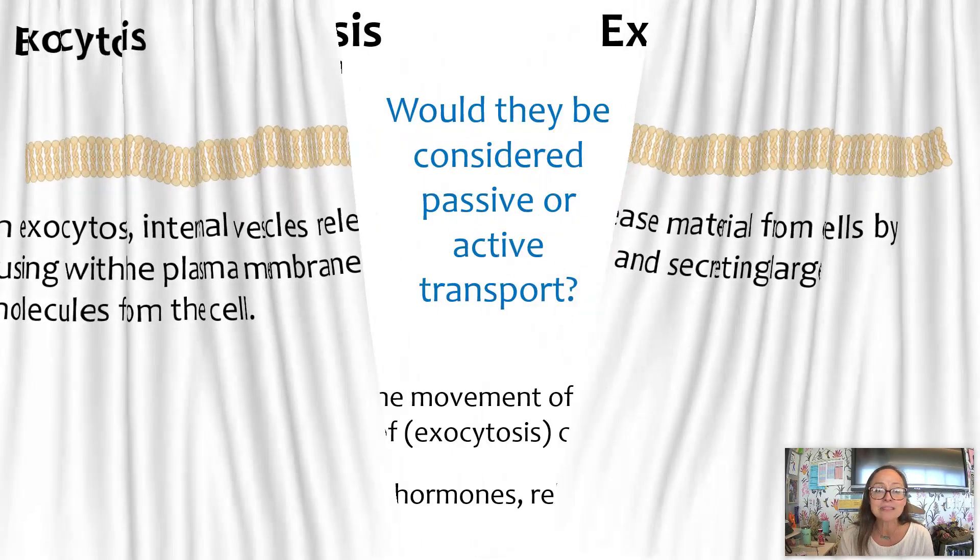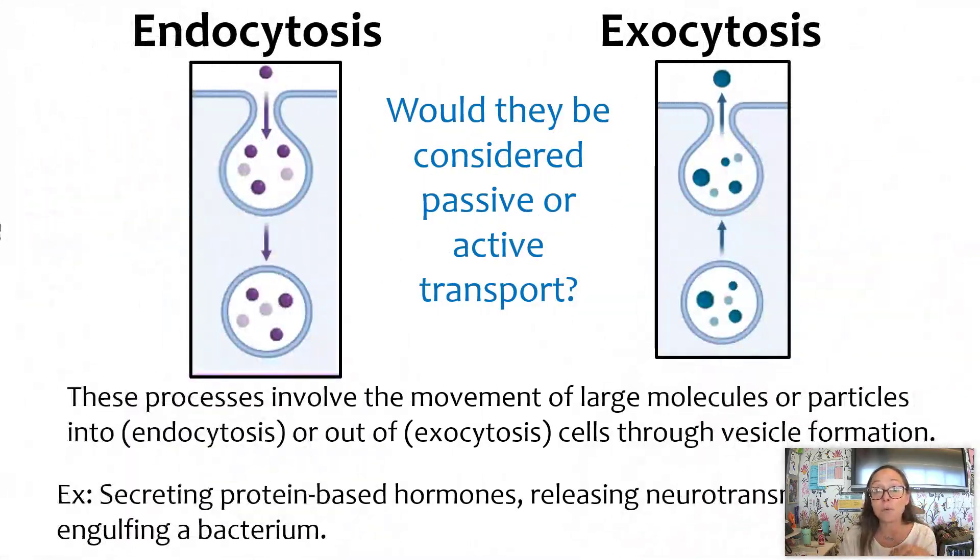Okay, so in exocytosis, internal vesicles release materials from cells by fusing with the plasma membrane and secreting large molecules from the cells. Now, I want you to think about these two types of bulk transport, endocytosis and exocytosis. Are these considered passive or active? Now, in my video, I didn't show ATP anywhere. But it's kind of, I think, logical to follow that it would require some energy, some ATP, to rearrange an entire cell membrane. So endo and exocytosis do fall under the category of active transport.